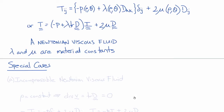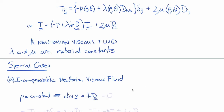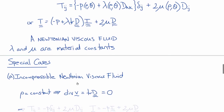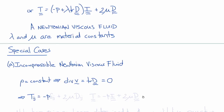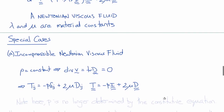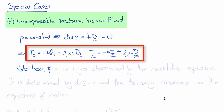Now there are some special cases. One special case is an incompressible Newtonian viscous fluid. In this case, the density rho is constant, which gives us that the divergence of the velocity vector v, or the trace of D, is equal to zero. Therefore, the constitutive equation for an incompressible Newtonian viscous fluid simplifies to T_ij equals minus p times delta_ij plus 2 mu times D_ij, or in direct notation, T equals minus p times I plus 2 mu times D. Note that the pressure p is no longer determined by the constitutive equation at all — it is determined solely by the incompressibility condition and the boundary conditions imposed on the equations of motion.